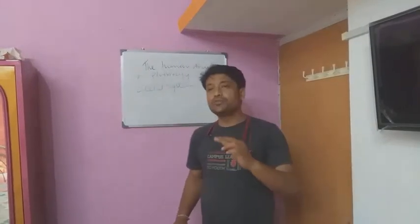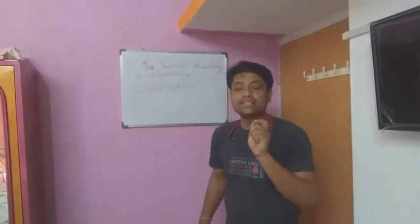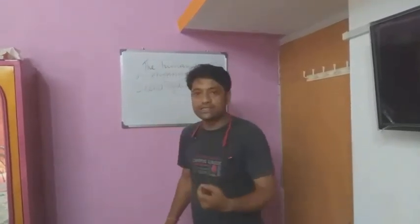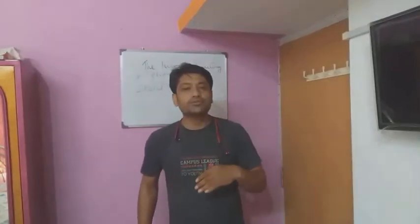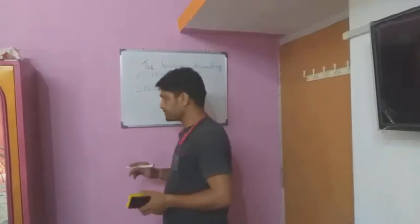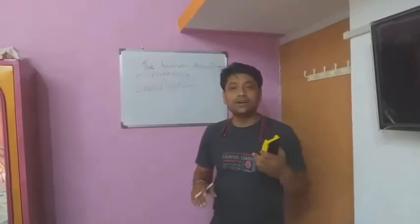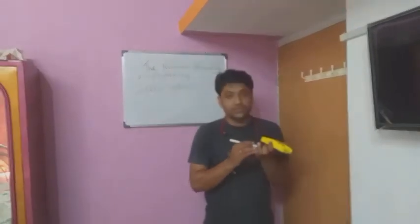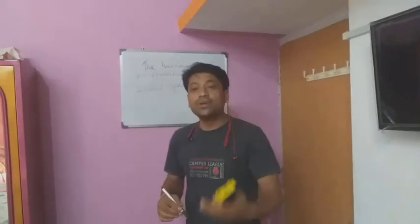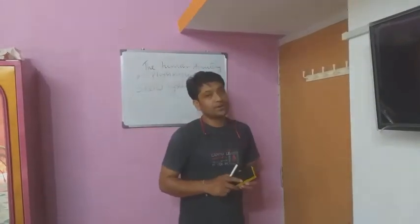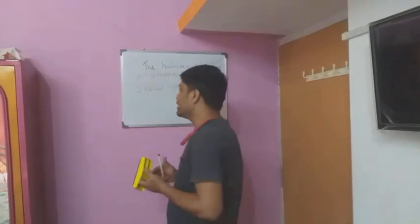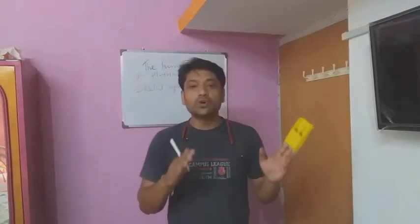A newborn baby has approximately 300 bones, but after the age of adolescence the number of bones is reduced to 206 bones. Some of the bone tissues unite with each other completely.